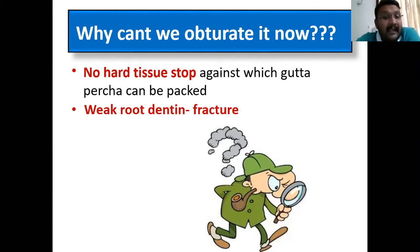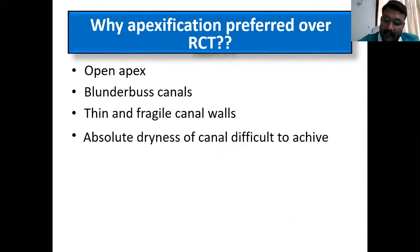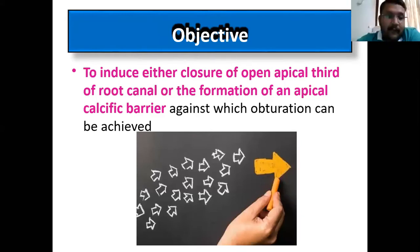Second, it will weaken the root dentine — there are higher chances of dentine fracture if you don't get a proper apical stop. Apexification is preferred over direct RCT for several reasons: open apex or blunderbuss canal means the dentine thickness on either side of the wall is very thin, so fracture risk is very high. Also, complete drying of the canal cannot be achieved when the apex is open. The major objective of apexification is to induce closure of the open apical third of the canal, or formation of an apical calcific barrier against which obturation can be done.